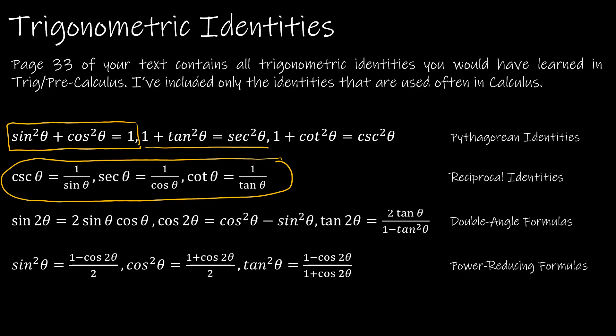Double angle formulas: the one used most often is sin(2θ) = sin(θ)cos(θ), but all of those double angle formulas may or may not be used. The power reducing formulas we don't use often, but it's just one more tool in your tool belt, in addition to the other identities found on page 33.